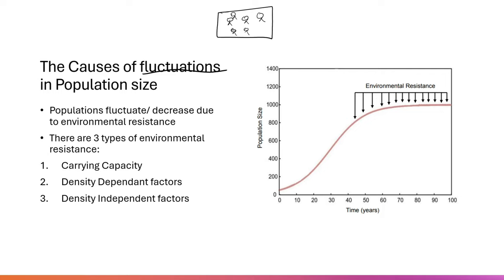Environmental resistance causes populations to fluctuate or decrease. When we talk about environmental resistance, we mean that the environment is resisting — or blocking — the population from growing. This happens through three types of environmental resistance: carrying capacity, density dependent factors, and density independent factors. These are three ways in which the environment can stop or decrease population growth.